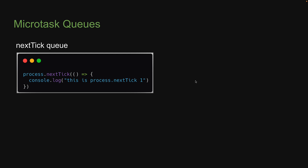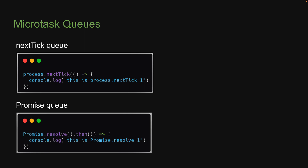To queue up a callback function into the promise queue, there are a few different ways, but for our experiments we just need to know one. The method we will be using is Promise.resolve().then() with a callback function. When the promise resolves, the function passed into the then-block is the function that will be queued up in the promise queue.